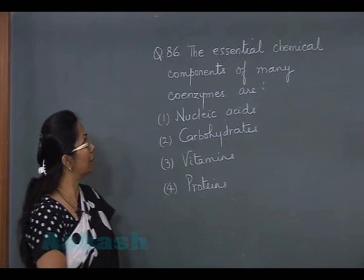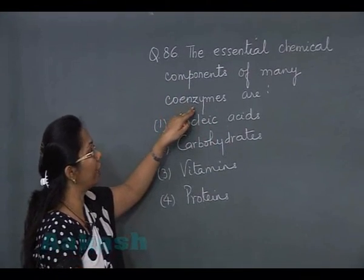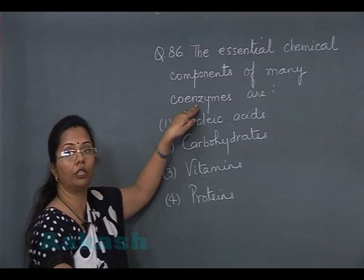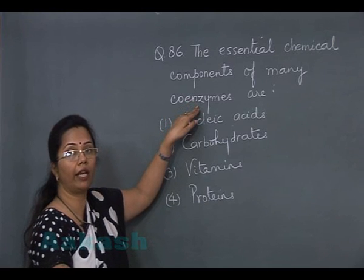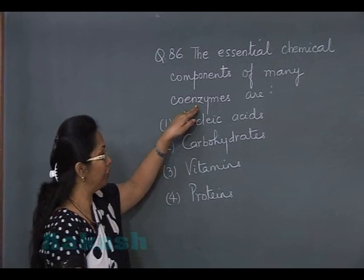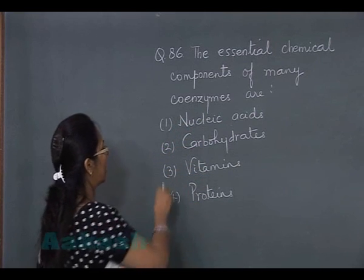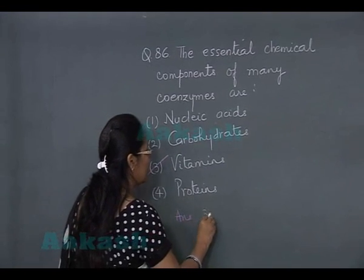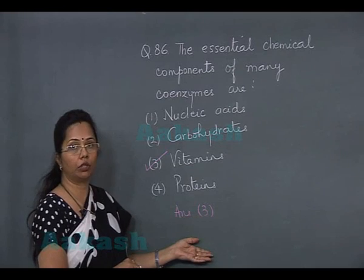Question number 86 asks about the essential chemical components of many coenzymes. Coenzymes act along with enzymes and are small, usually low-molecular-weight organic molecules. For example, coenzymes like NAD and FAD — their constituents are vitamins. So the correct answer is option 3, vitamins, because all B-group vitamins (B complex) act as coenzymes.